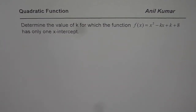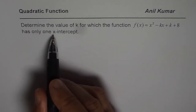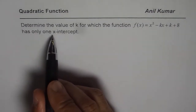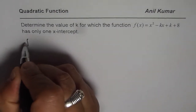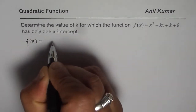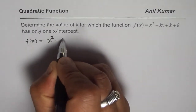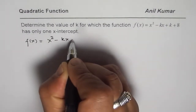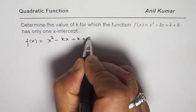I am Anil Kumar and we are exploring roots of quadratic functions. The question is: determine the value of k for which the function f(x) = x² - kx + k + 8 has only one x-intercept. So we are given the function f(x) = x² - kx + k + 8.